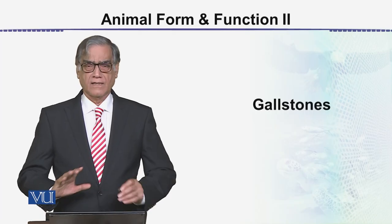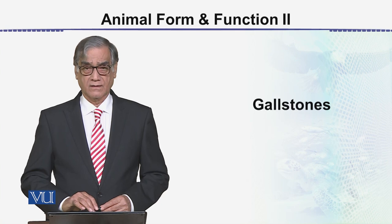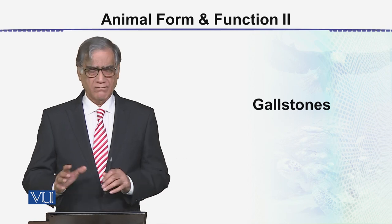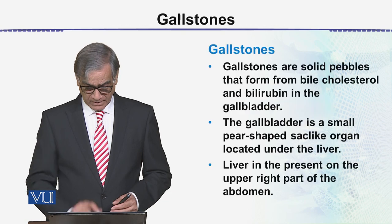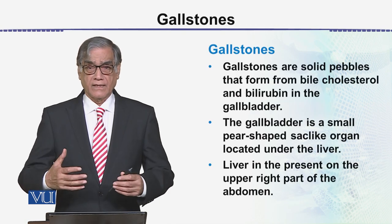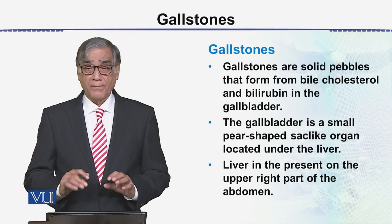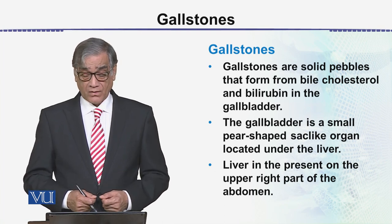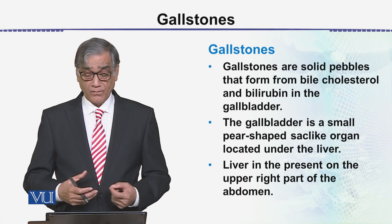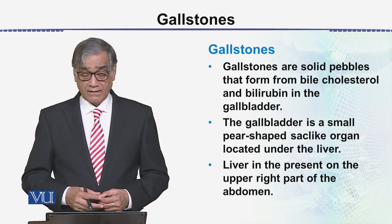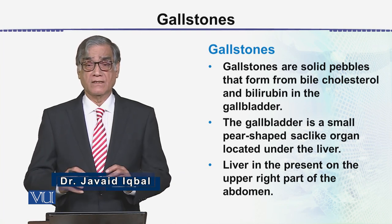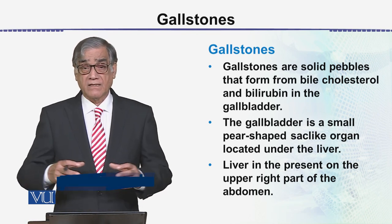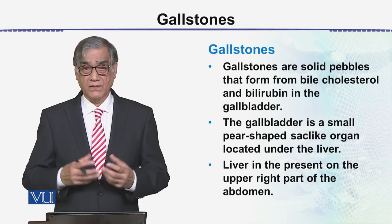This is an important topic: gallstones. These are solid pebbles — small stones which develop within the gallbladder. They are formed from bile, cholesterol, and bilirubin, or calcium phosphate, or many other salts, through deposition and crystallization, which is why they are called pebbles or stones.